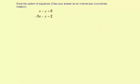Solve the system of equations. Enter your answer as an ordered pair, coordinate notation. Now let's look here. x minus y equals 0. Negative 3x minus y equals 2.